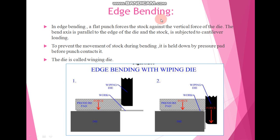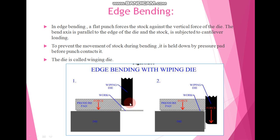Now let us talk about the next type of bending, that is edge bending. In edge bending, a flat punch forces the stock, that is the material, against the vertical face of the die. Here we have the die and the work piece material, and we apply force with the help of this punch to get the bending operation. The bent axis is parallel to the edge of the die, and the stock is subjected to a cantilever loading. To prevent the movement of the stock during bending, it is held down by a pressure pad before the punch contact.